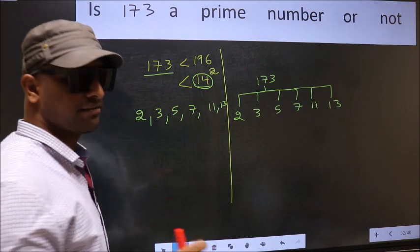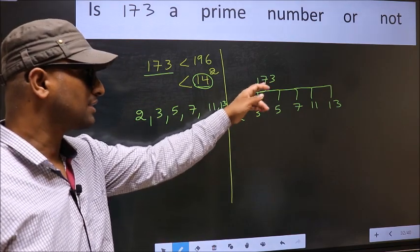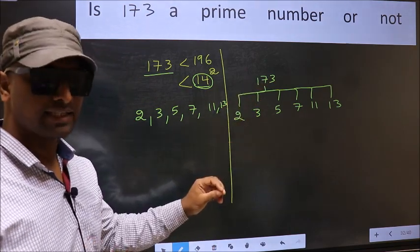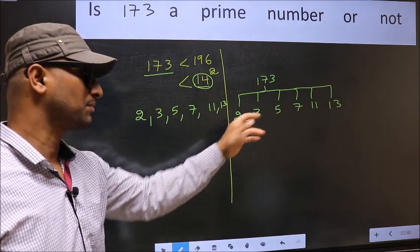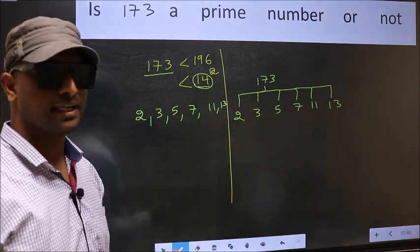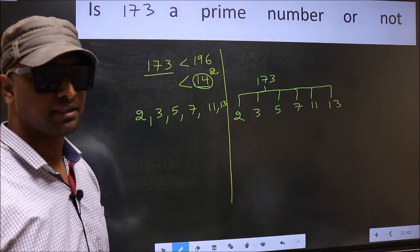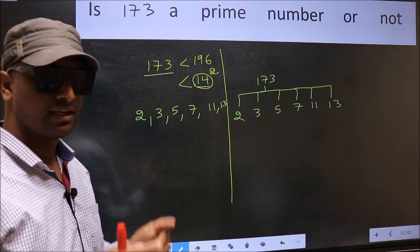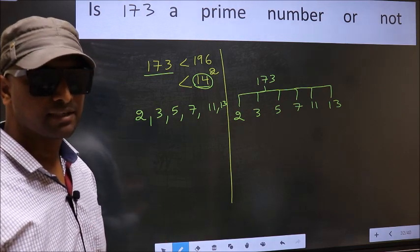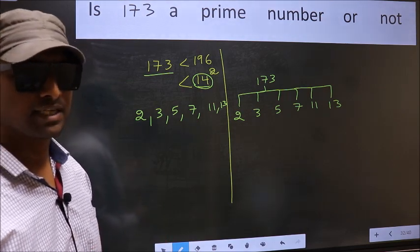If the given number 173 is divisible by any one of these numbers, we say it is not a prime number. Otherwise, it is a prime number. Did you understand the method? Let us check with the divisibility.